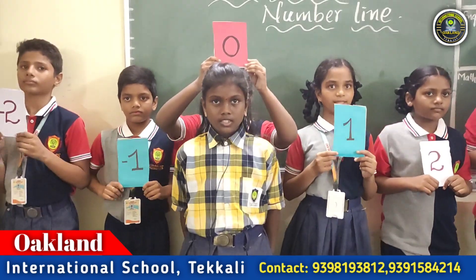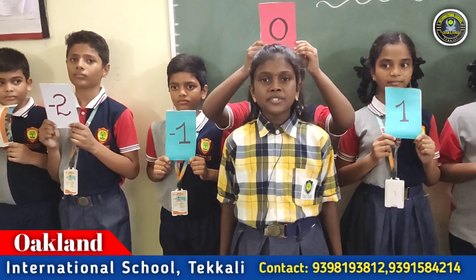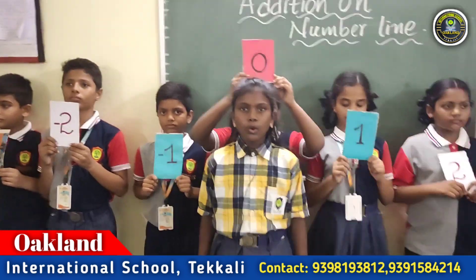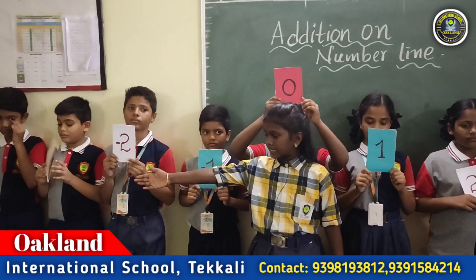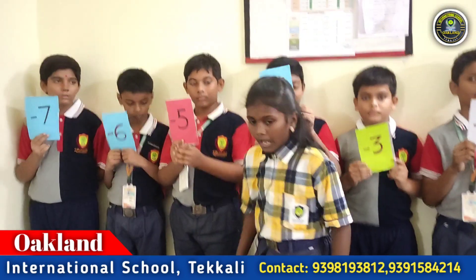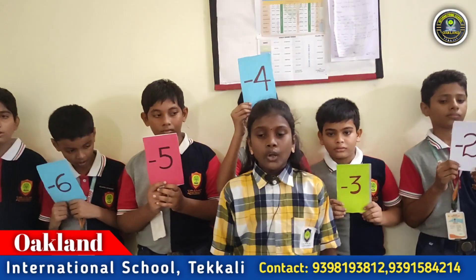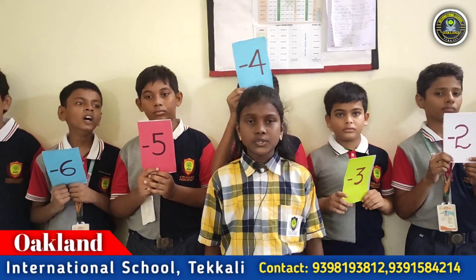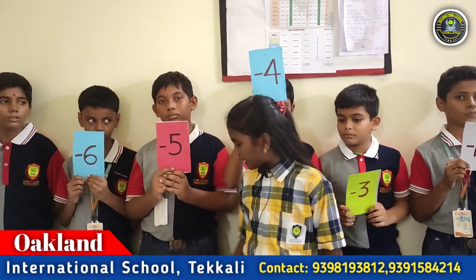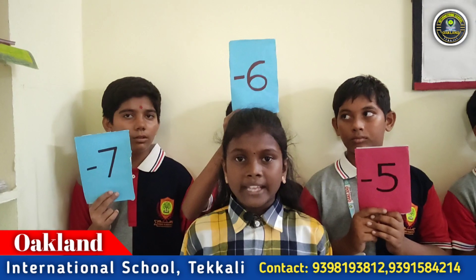Okay. Can everybody explain it? Your question is minus four plus minus two. Where I am standing, that is zero position. We have to move four steps left side on the number line. One, two, three, four. Now I reach minus four. We should add minus two. Minus two is a negative integer, so we have to move left side. One, two. Now the answer is minus six.